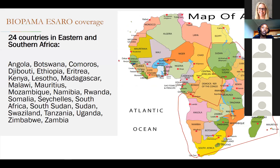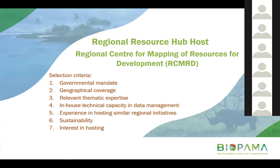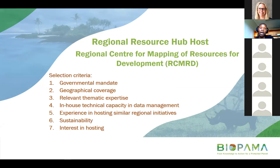The Regional Resource Hub for the Eastern and Southern Africa region will cover 24 countries, including the associated islands. The Regional Resource Hub host will be the Regional Center for Mapping of Resources for Development, selected through an expression of interest by IUCN because of their governmental mandate, geographical coverage of the same 24 countries, and relevant thematic expertise.